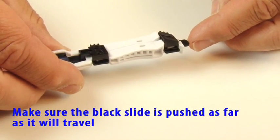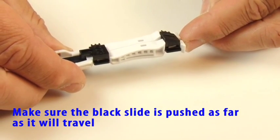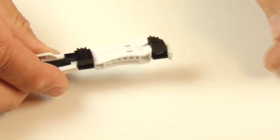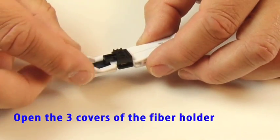Make sure the black slide is pushed as far as it will travel. Open the three covers of the fiber holder.